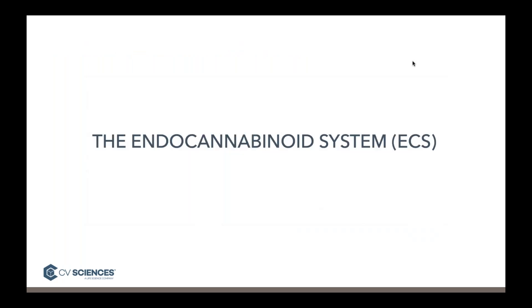Now we're going to switch gears and talk about the endocannabinoid system. This system has been preserved over hundreds of millions of years, which gives us an indication of how important it is. It's said to be more than 600 million years old and is present in every animal species except insects. It is an extensive signaling system. The signaling molecules are endocannabinoids, and they are distributed throughout the body. The basic idea is that these molecules act to restore homeostasis when balance has been disrupted — whether by an infection, an injury, acute or chronic disease, or many other things.